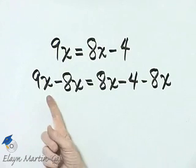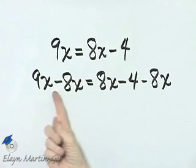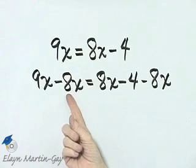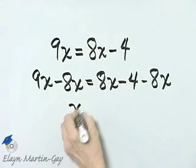Now let's look at the left side. What is 9x minus 8x? Well, 9 minus 8 is 1, so it's 1x, which we can write as simply x.